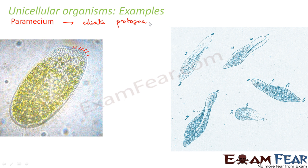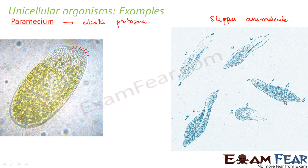Paramecium is covered with hair-like cilia all over the body. It is also known as the slipper animalcule because of its appearance — if you look at the picture, paramecium looks like a slipper. In paramecium, just one single cell performs all the basic functions needed for the survival of the organism.